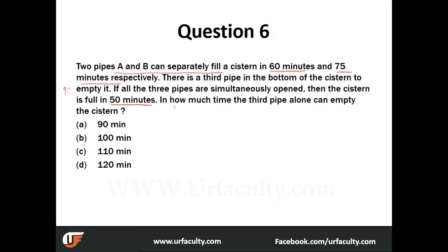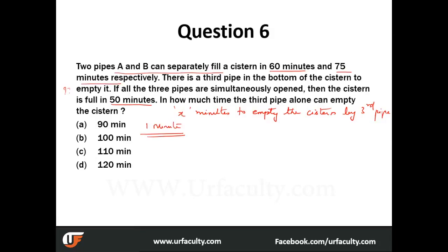Let's start off by assuming it takes x minutes for the third pipe to empty the cistern. If we had to come up with an equation for the work done by all three pipes in one minute, what do we get?